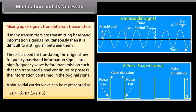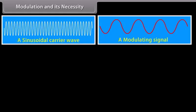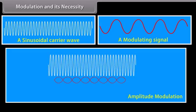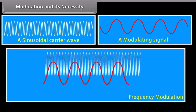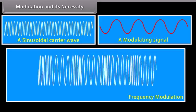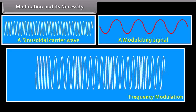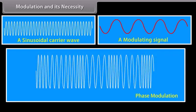A sinusoidal carrier wave can be represented as C(t) = AC sin(ωCt + φ). There are three types of modulation: amplitude modulation, frequency modulation, and phase modulation.